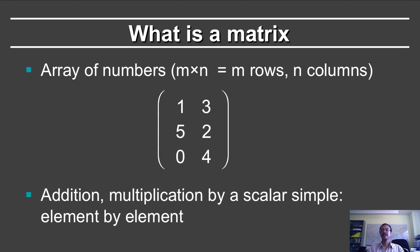First question, what is a matrix? It's just an array of numbers. It has m rows, in this case three rows, and n columns, in this case two columns. Operations you can do on a matrix, addition and multiplication by a scalar, are simple. They're just applied to each element of the matrix.